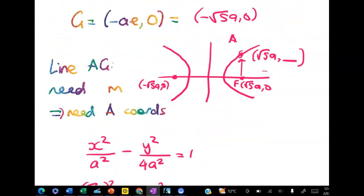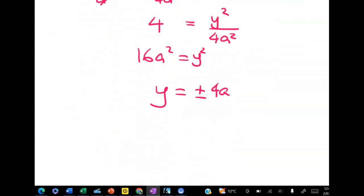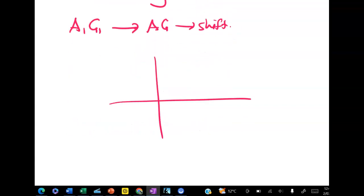Now go back to our graph. We want the top branch so we're going to have 4a. Down here would be the negative 4a. So this point will be root 5a for the x and 4a for the y. Now all we're asked to do now is to find the line. We're going to find the line joining a and g and then we're going to shift it back. So the line joining a and g is now a much simpler problem.